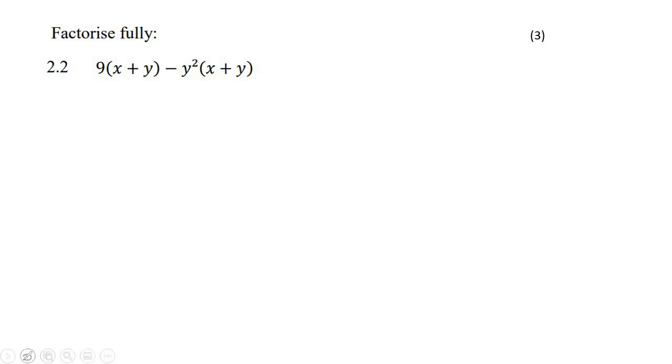Here they want us to factorize. Now, when you have a bracket that is the same, then you must take that bracket out as a common factor. So, x plus y. Then what do you have left over? Well, if you cancel that and you cancel that, then you're left with 9 minus y squared.